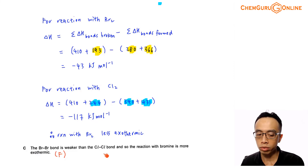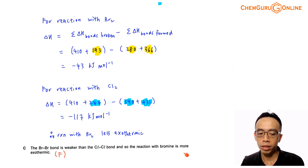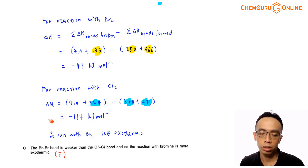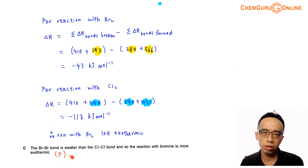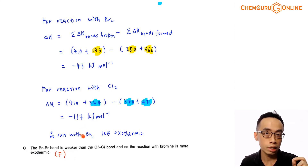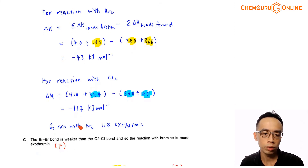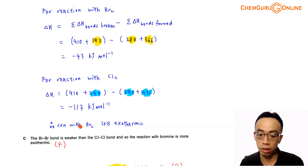Coming back to statement C, which claims that the reaction with bromine is more exothermic — this statement is false. Option C is not difficult, just a little tedious since it requires calculation, but we can still work through it.